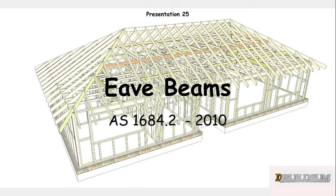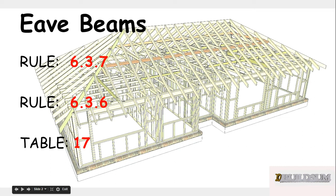G'day and welcome back to Buildsum. In this, the 25th presentation in the series on the timber framing code AS1684.2, we're going to look at eave beams, sometimes better known as veranda beams. The rules we're going to need are 6.3.7 and 6.3.6, and the table we're going to look at in particular today is Table 17 of the supplements.